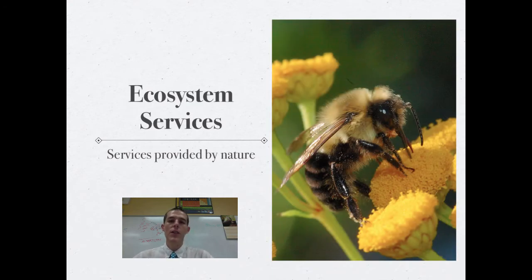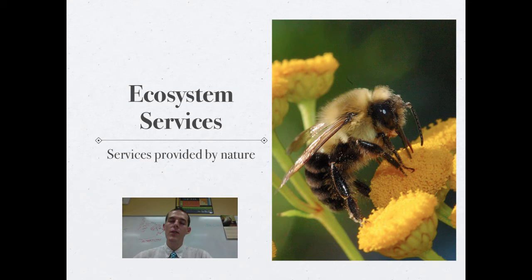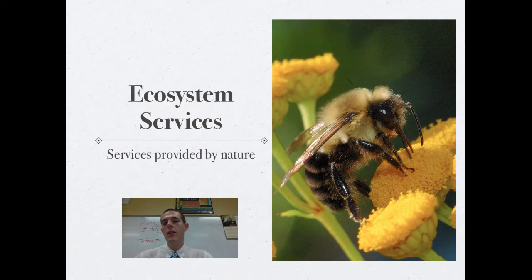Ecosystem services are things that the environment provides for us that we might be able to do for ourselves, but if we were to do it, it would be extremely expensive. So these are things that we get directly from the environment. There are five different types of ecosystem services, so we'll talk through those.